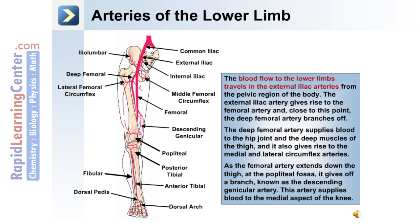Blood flow to the lower limb travels in the external iliac arteries from the pelvic region. The external iliac artery gives rise to the femoral artery, and close to this point the deep femoral artery branches off. The deep femoral artery supplies blood to the hip joint and the deep muscles of the thigh, and also gives rise to the medial and lateral circumflex arteries. As the femoral artery extends down the thigh at the popliteal fossa, it gives off the descending genicular artery, which supplies blood to the medial aspect of the knee.